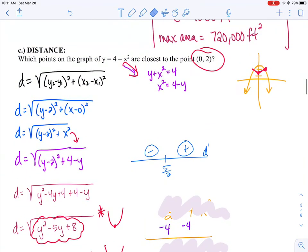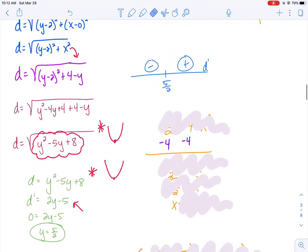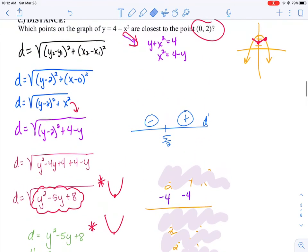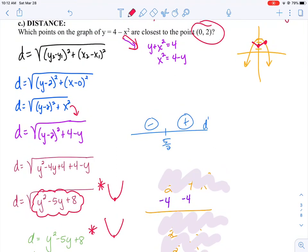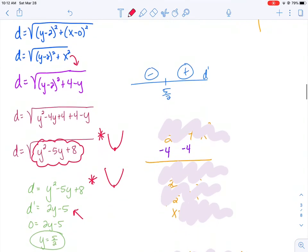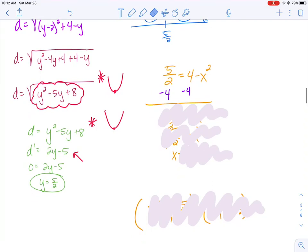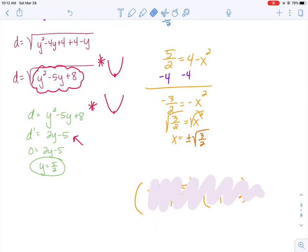Now, the question says, what point or points on the graph are closest? And we just found y values. In order to have a point, don't I need an x and a y? So what can I use to figure out the x values if y is 5 halves? Well, I should be able to use this original equation that says y equals 4 minus x squared. I should be able to plug in my 5 halves wherever I see a y, and I should be able to solve for x. So I subtracted 4 from both sides. I divided by negative 1. I square rooted. Now be careful. Remember, any time you square root, you need to add plus or minus to your answer. I ended up getting two values. I ended up getting x equals positive square root of 3 halves and negative square root of 3 halves. So it looks like I have two points that are closest to the curve and the point (0, 2).